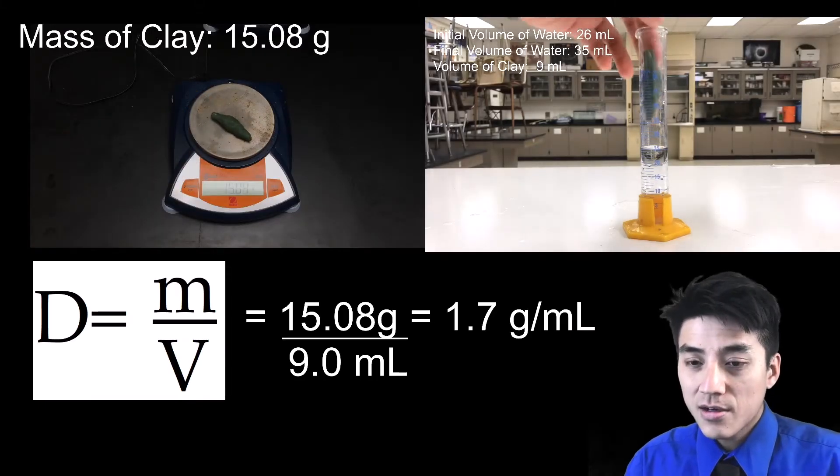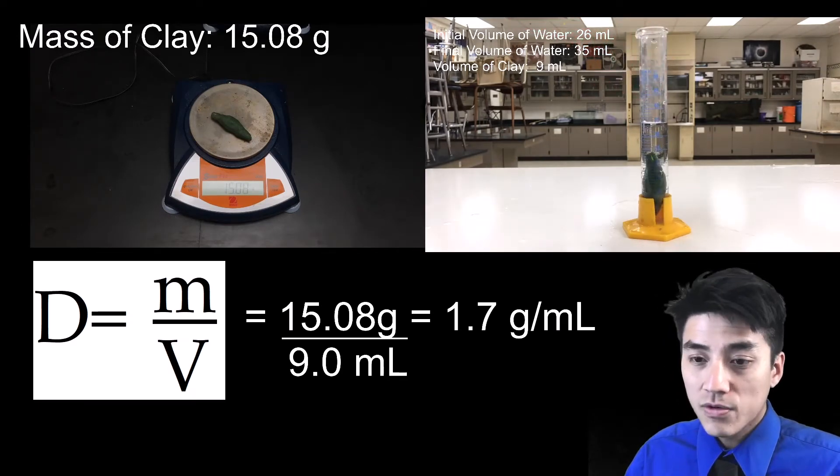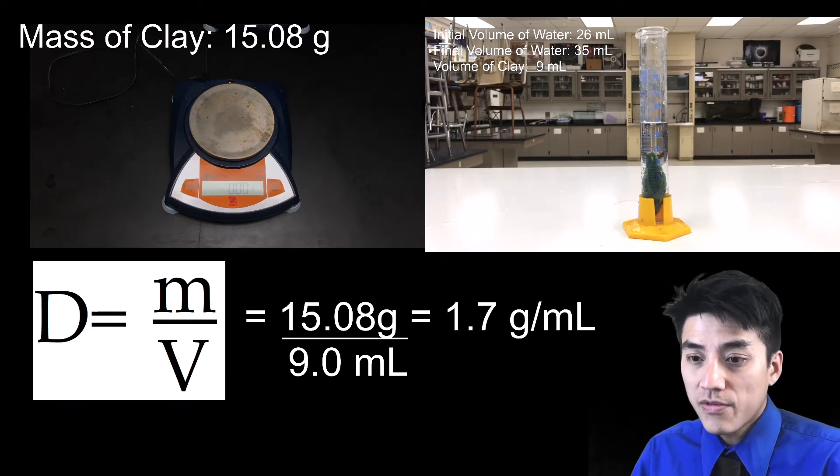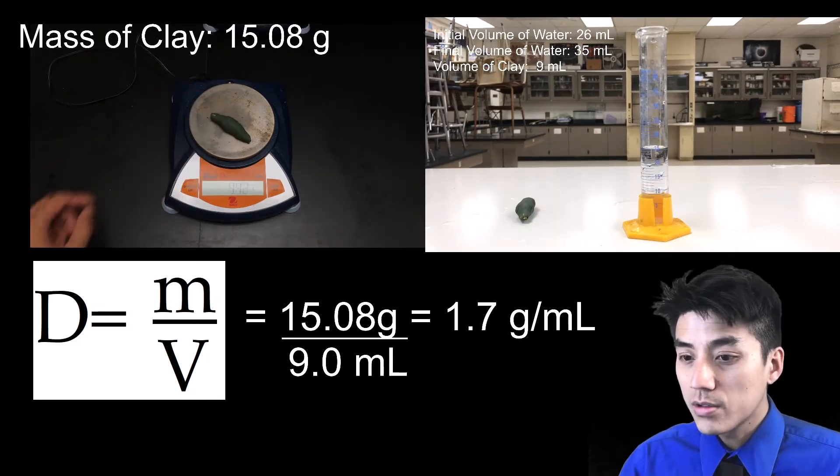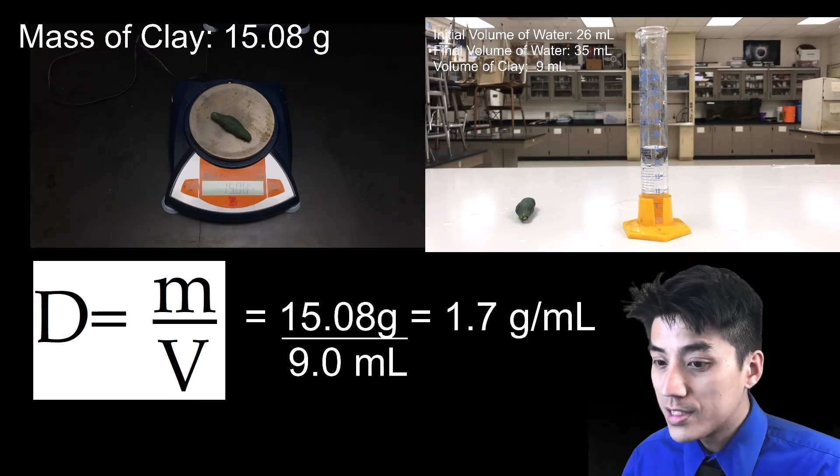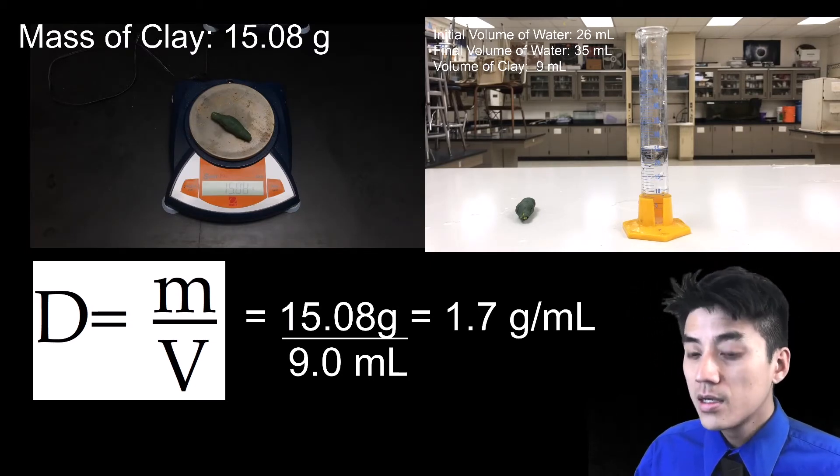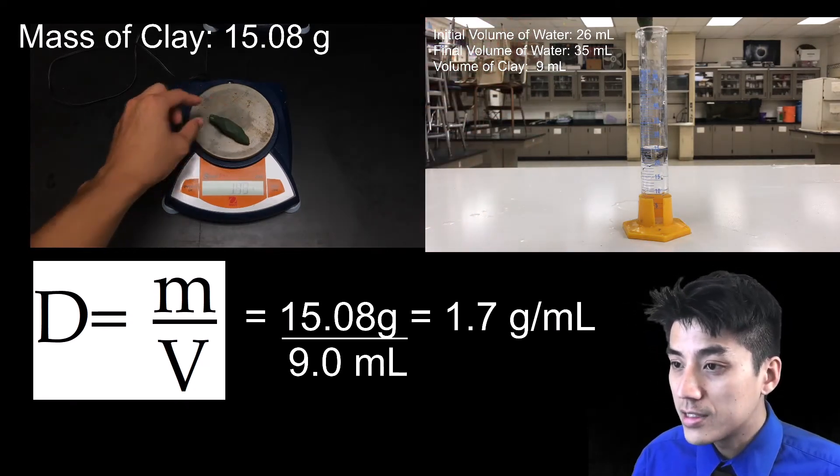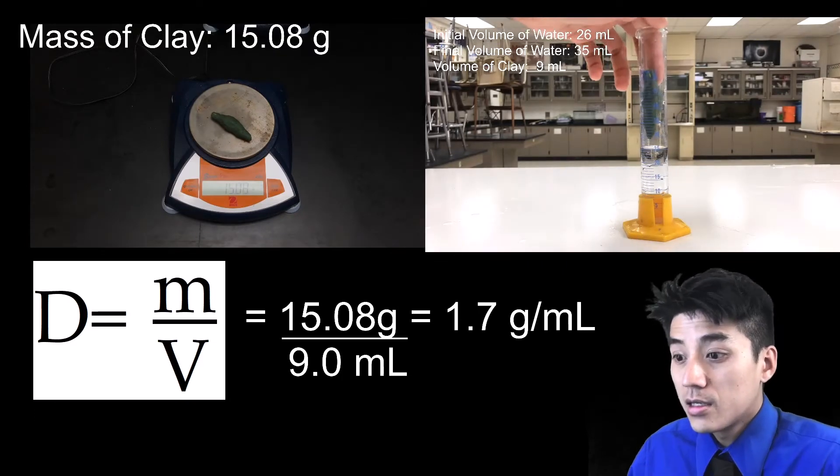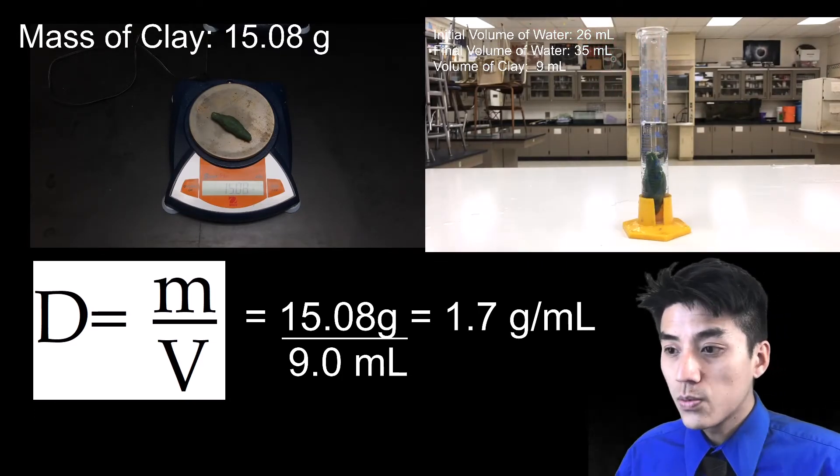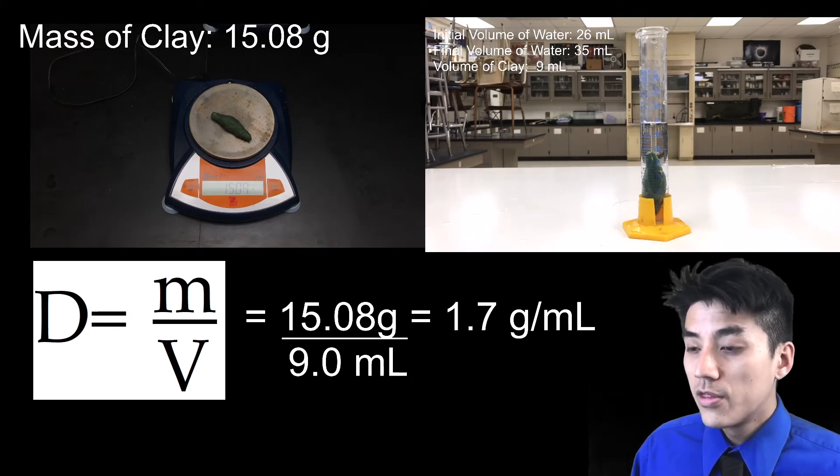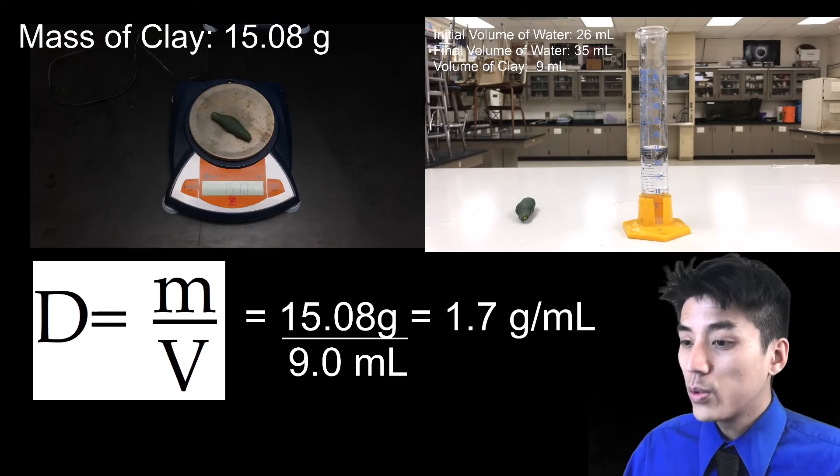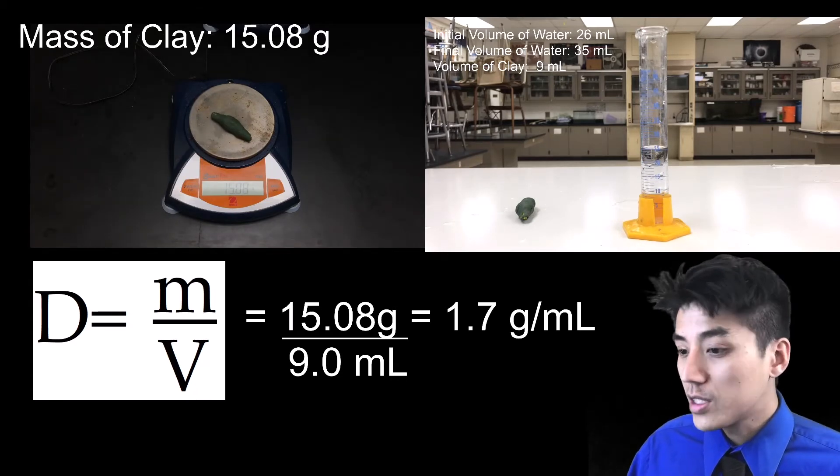So let's put this together. Again, our equation is D equals M over V, mass divided by volume. So in the previous clip, we found out that the mass was 15.08 grams, and that the volume was 9 milliliters. So if you go 15.08 divided by 9, you should get 1.7 grams per milliliter as the clay's density. And ask yourself, does it make sense? And it should, because we know, we understand that the density of water is 1, and because the clay sinks, and you got an answer of 1.7, that sounds reasonable, and the answer makes a lot of sense.